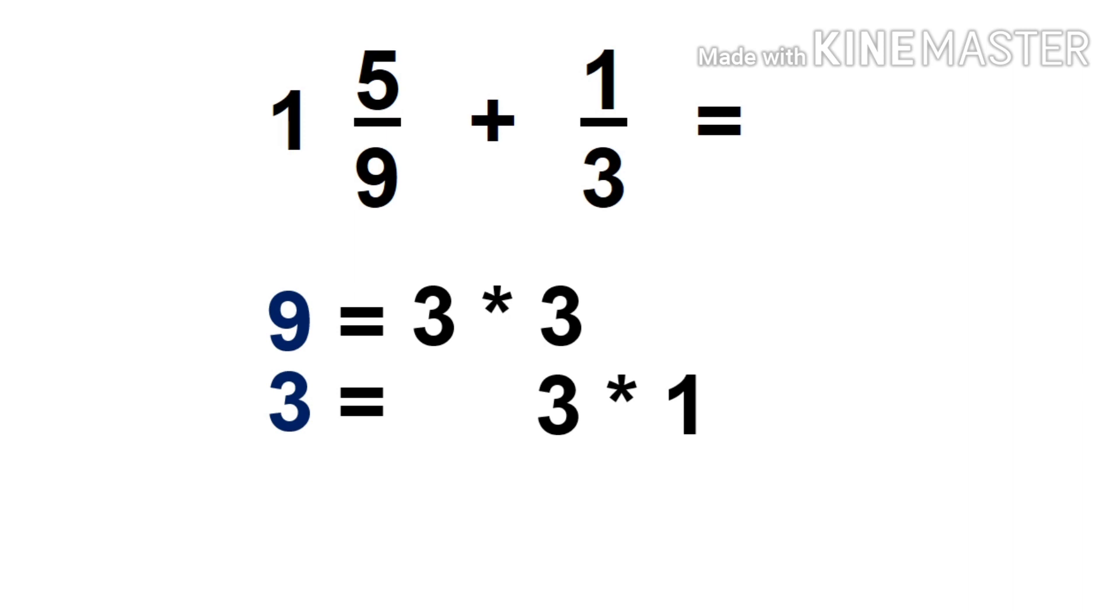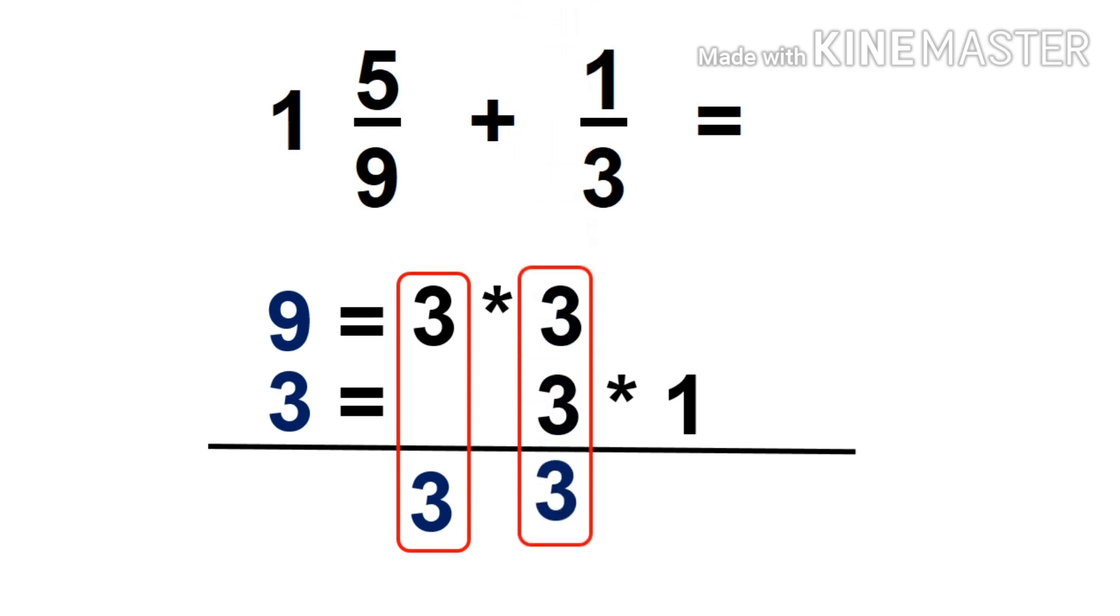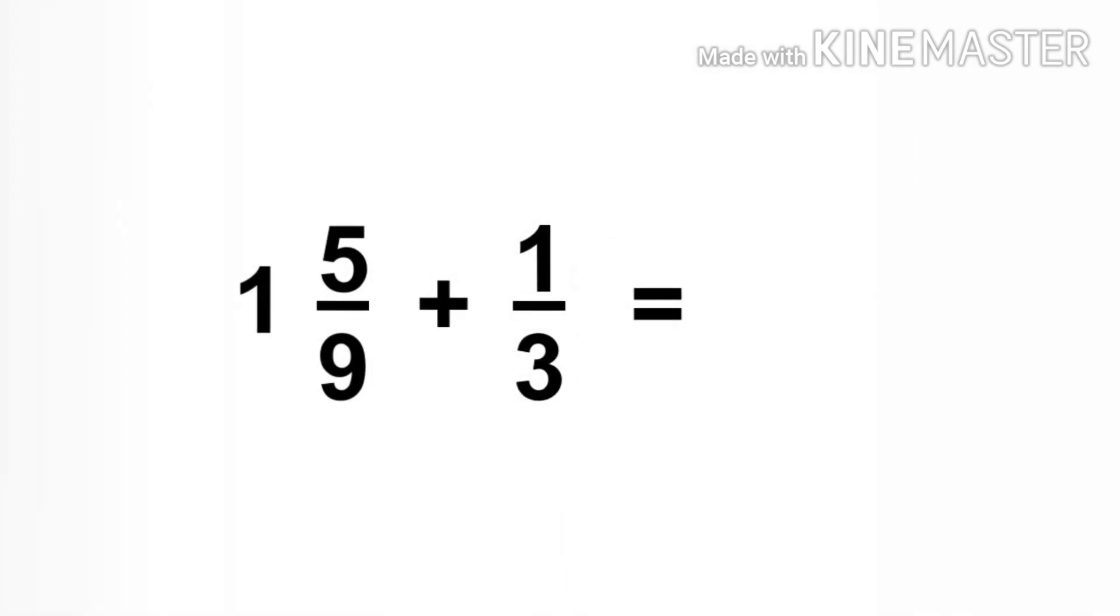After listing all those factors, we're going to write them down. Factors listed in 9 and 3. So we have 3 times 3 is equal to 9, times 1 is equal to 9. So our LCD is 9. Write 9 as our denominator.